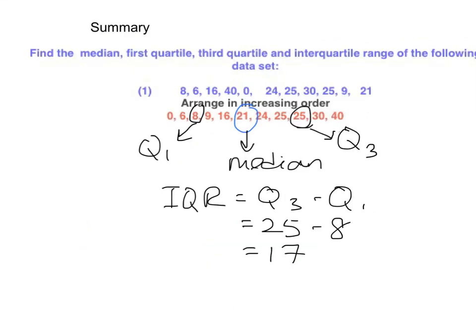Here is a summary of our results: Q1 being 8, Q3 being 25, median being 21, the interquartile range is 25 minus 8, 17.